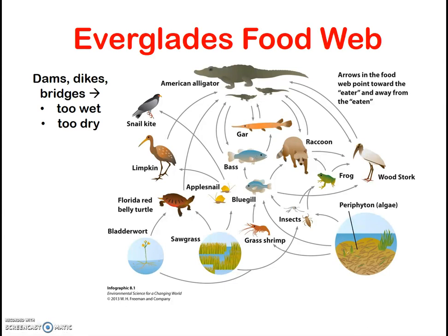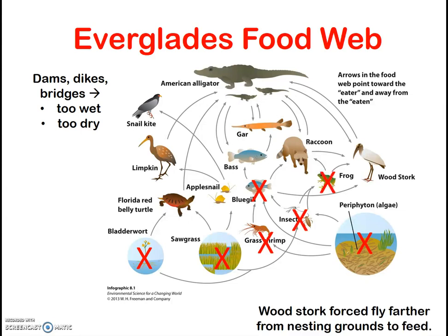Essentially, many of the organisms at the base of the food chain were impacted — sawgrass, algae, as well as most of the stork's food supply: fish, shrimp, and frogs. This forced the wood stork to fly farther and farther from its nesting grounds to feed, and it caused a dramatic decline in their population.